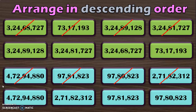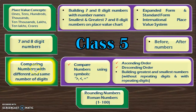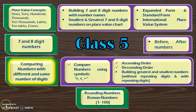Dear viewers, if you had understood the rules explained for comparison of numbers in the beginning of the video, doing this activity of arranging in ascending and descending order will become very easy. With that, we have completed the topics of comparing numbers and arranging in ascending and descending order in this video. Building the greatest and smallest number will be done in the next video. Each of the learning outcomes given here are dealt with in separate videos.